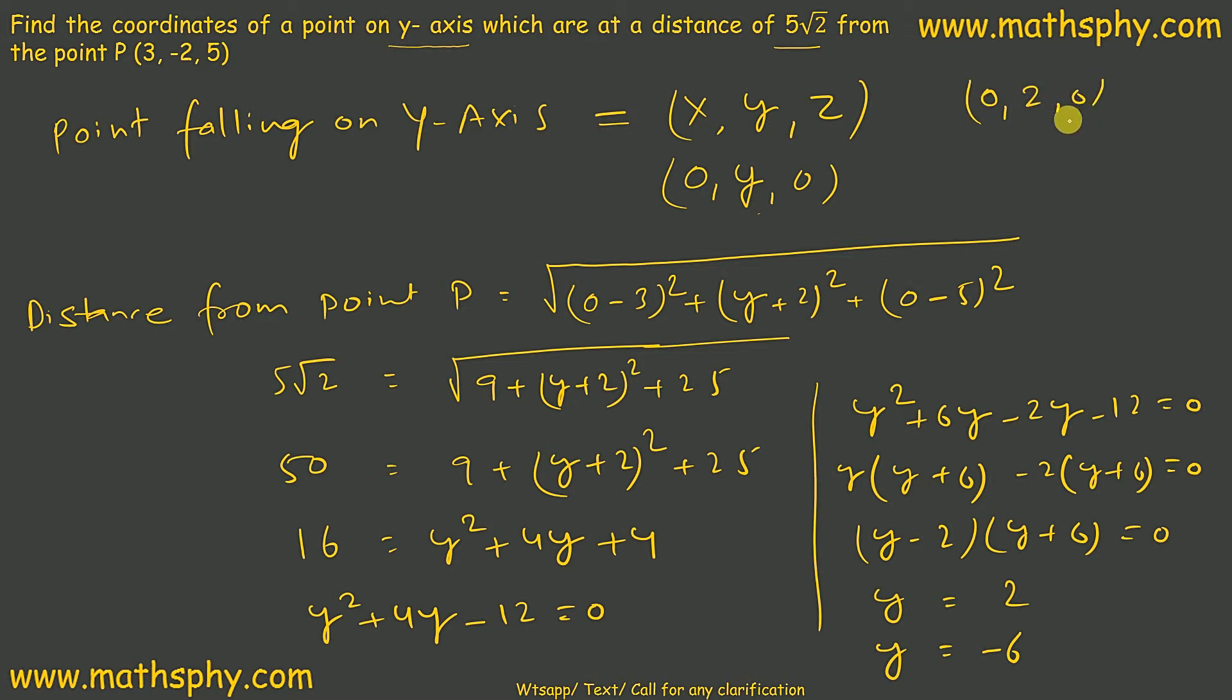This can be a coordinate. Second coordinate can be x as it is 0, y negative 6, z as it is 0. So I have 2 possible points on y-axis whose distance from this point can be 5 root 2. And the coordinates are 0, 2, 0 and 0, negative 6, 0. These two points are possible.